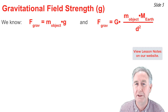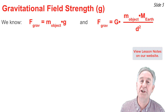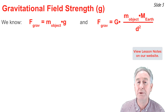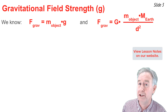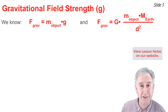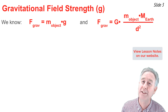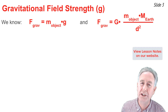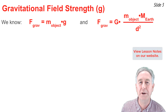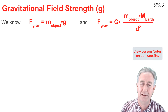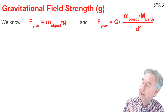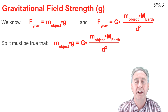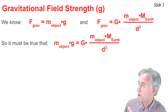We've also learned in this unit that the force of gravitational attraction between Earth and any object equals the universal gravitation constant multiplied by the product of the mass of the Earth and the mass of the object, divided by the distance squared, where d is the distance between Earth's center and the object's center. We can take these two expressions for the force of gravity and set them equal to one another, and we have this equation.